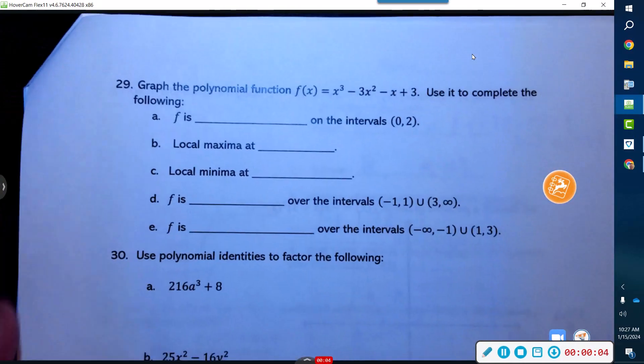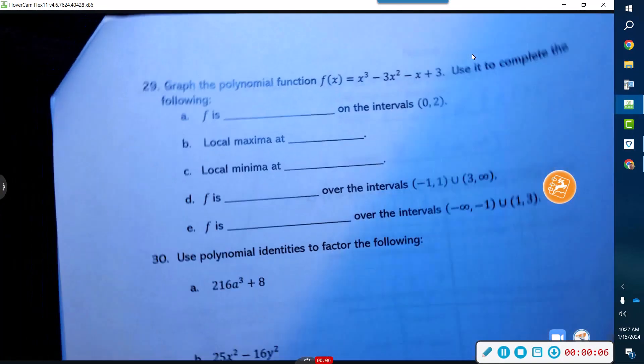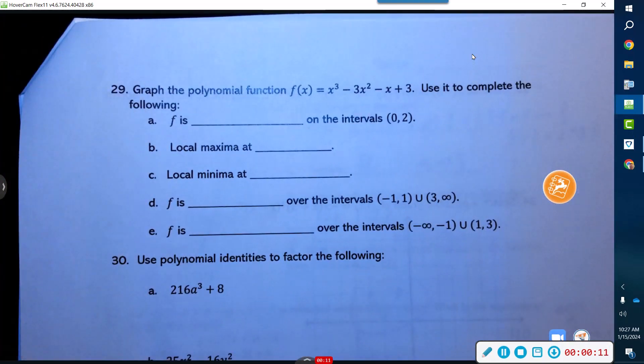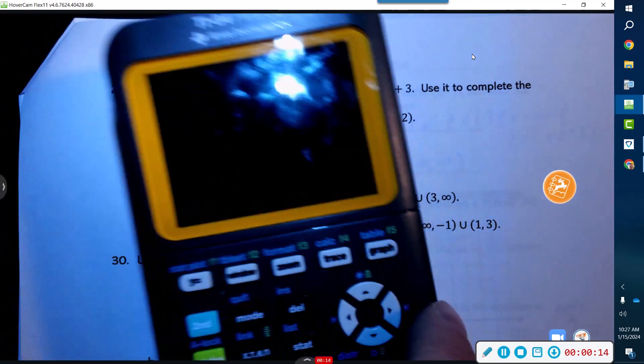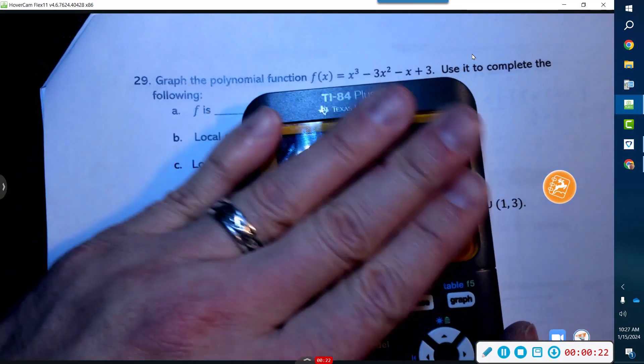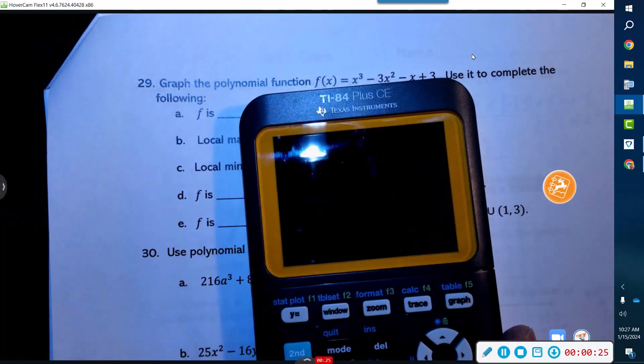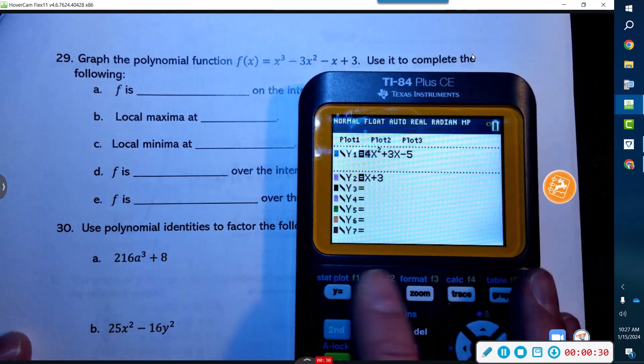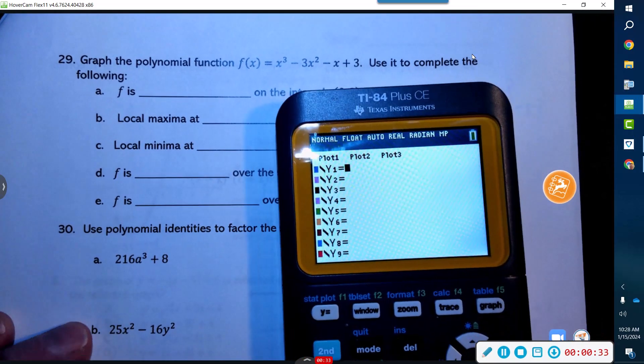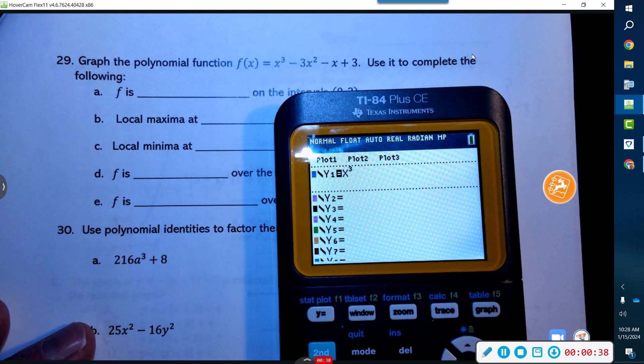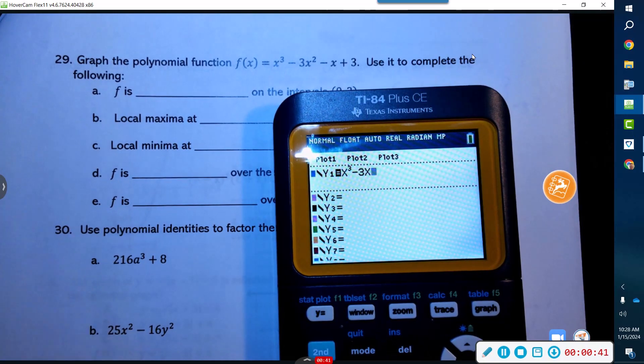Okay, 29. All right, 29 is graph that polynomial. I don't know how to graph a cubic without a graphing calculator. We're going to go ahead and go y equals, turn it on, get rid of these guys, we're going to graph this guy and then we're going to see if we can figure out all these details. Okay, x³ minus 3x².